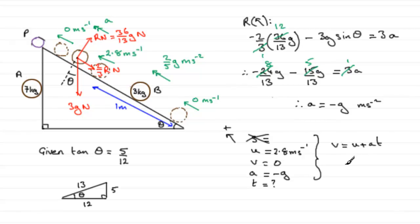So we know V, V is zero. U is 2.8. The acceleration is minus G, so we end up with minus GT. So GT would equal 2.8, and so if we now divide through by 9.8, T equals 2.8 over 9.8, and that works out exactly at 2 sevenths. 2 sevenths of a second, then, before it comes to instantaneous rest.